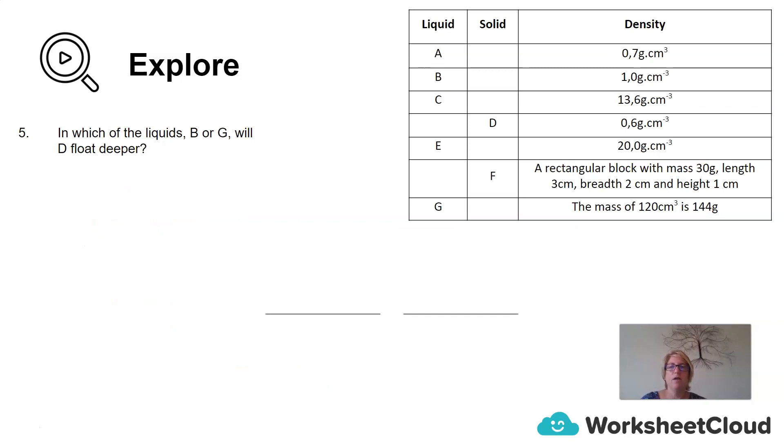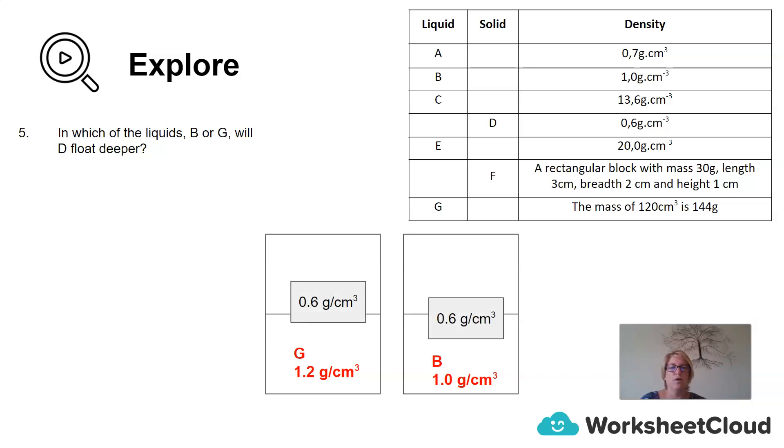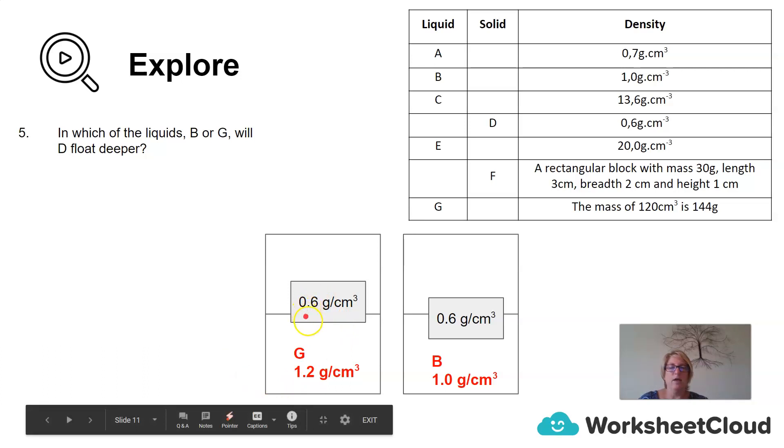If we have a look at question 5, in which of the liquids B or G will D float deeper? We have the calculations for B and G. We've worked them out in our previous exercises, in the previous questions. The density of G is 1.2 grams per cubic centimeter, and the density for B, which we get off the table, is 1.0 grams per centimeter. Then we've calculated the density of D. It's 0.6 grams per centimeter cubed. If we have a look at it, there is 0.6 grams difference between the density here, and there's only 0.4 grams difference between the density here, which means this block is a closer density to 1.